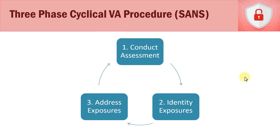Let's take a look at a couple of ways to look at vulnerability assessments. The first is from SANS — a nonprofit research organization that trains people on information security, provides certifications, and offers best practices and white papers. Their very basic three-phase cyclical process: step one, conduct the vulnerability assessment to identify what vulnerabilities exist; step two, identify the exposures we have to risk because of vulnerabilities that could be exploited; step three, address those exposures appropriately based upon a risk management framework — do a risk assessment, determine what controls to put in place, address those exposures, then start all over again on an ongoing basis.